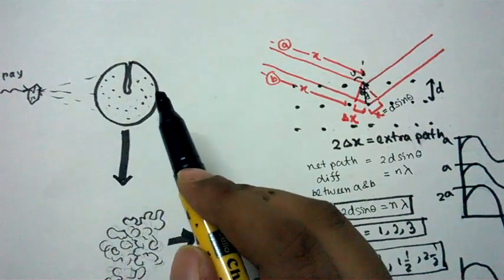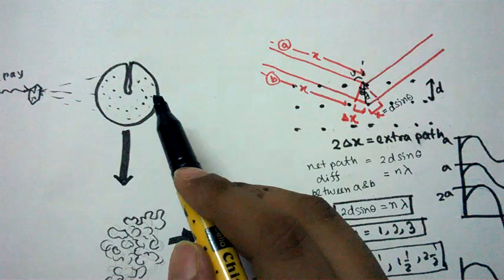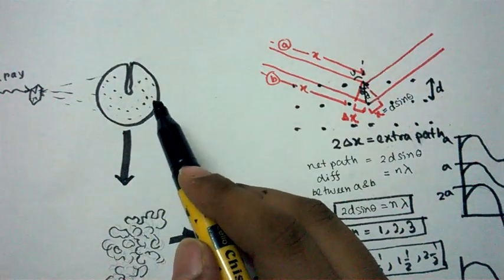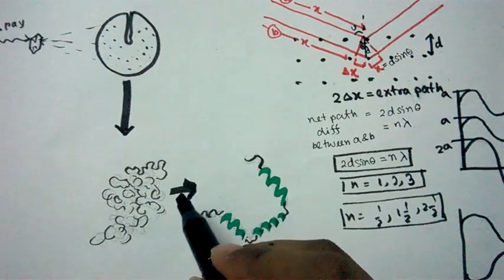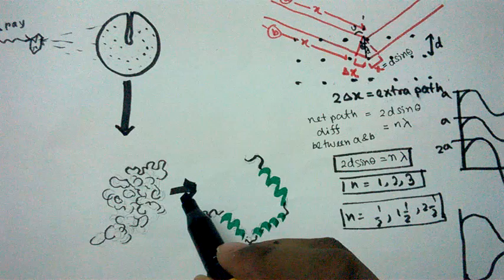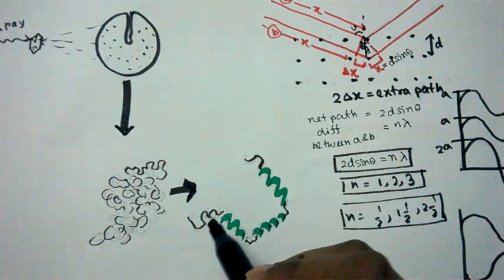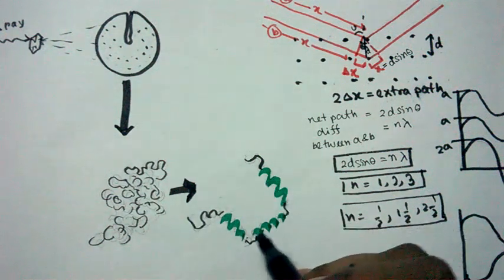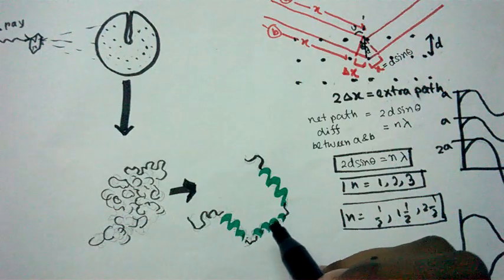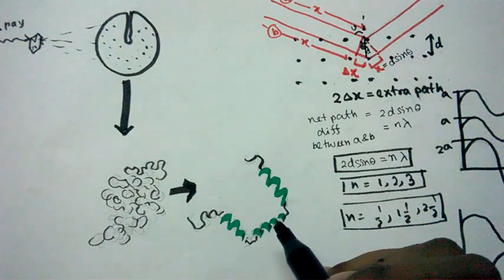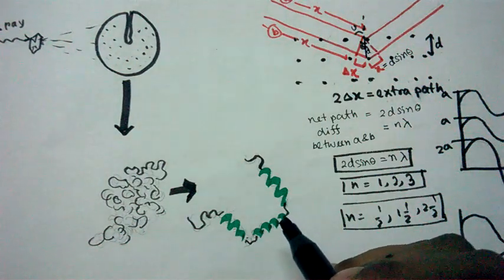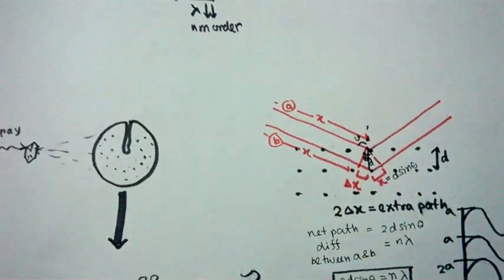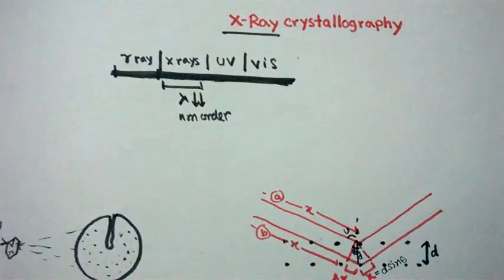By analyzing the diffraction pattern and applying a Fourier transform, we get our electron density map. From the density map we fit atoms and molecules and build a protein model. We then validate this protein model using the Ramachandran plot, plotting its phi and psi angles to validate the protein structure. That is all about X-ray crystallography.